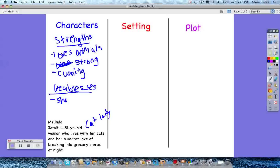Weaknesses. Shady ethics. As you can see, really, from the kind of secret love of breaking into grocery stores, that's not very ethical, is it? It doesn't have a good sense of right or wrong. So, as you can see from my crappy handwriting. Melinda Jarsitis, 51-year-old woman who lives with 10 cats, has a secret love of breaking into grocery stores at night. Loves animals, very strong woman, cunning, weakness, has shady ethics. So, there we go. Just some initial thoughts about this character.